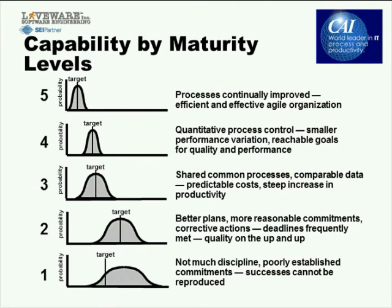What you see here is capability by maturity levels expressed as a distribution. At level one, the probability of attaining a target — whether cost, time to market, or quality — is very small. Usually you finish late with overruns, using part of delivery time to make it right for the customer. At level two, you have better plans and more reasonable commitments, your team is more disciplined, and you can see the curve beginning to improve.